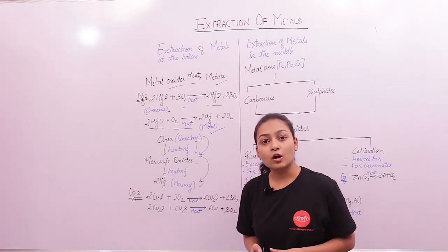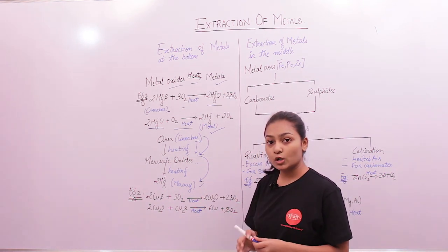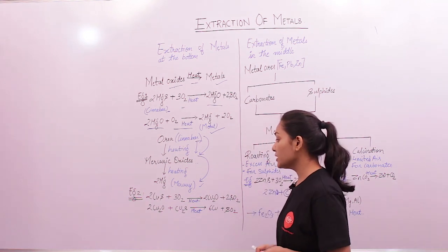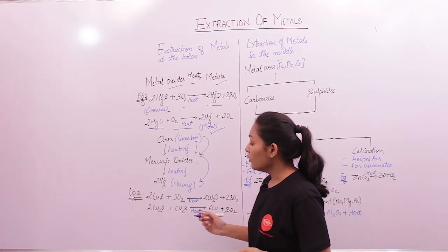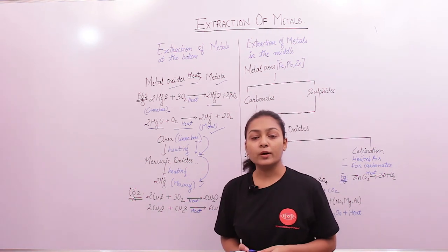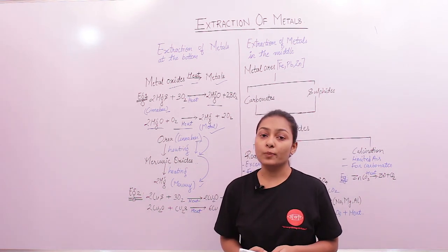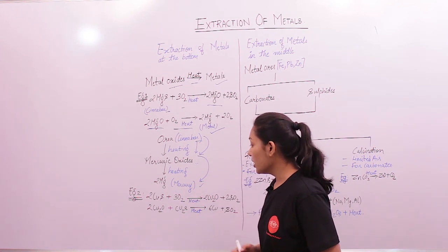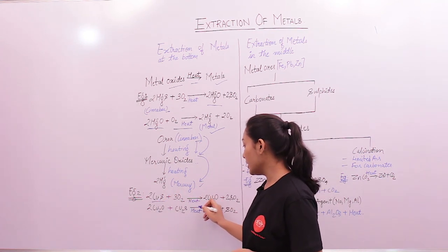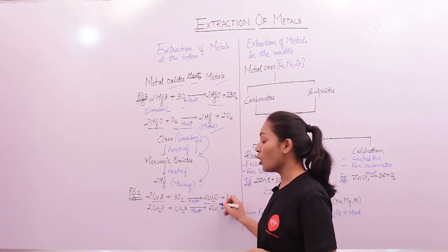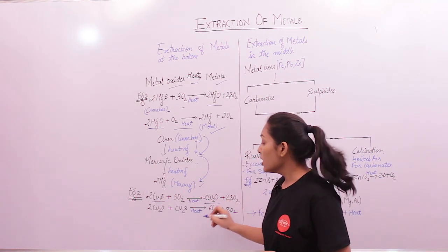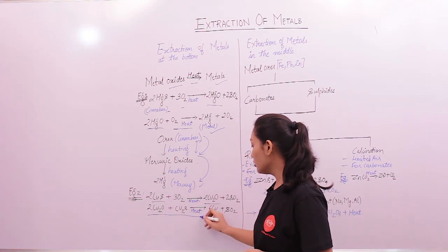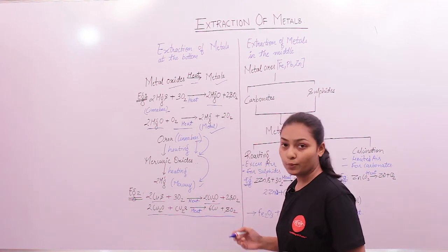We can also take the example of copper, which is also present at the bottom of the reactivity series. Copper is obtained as copper sulphide in its ores. Copper sulphide is heated to obtain copper oxide, and copper oxide is again heated to obtain copper.